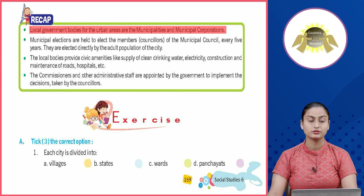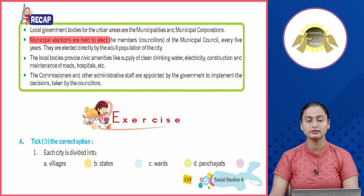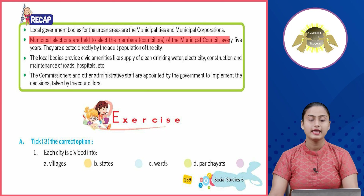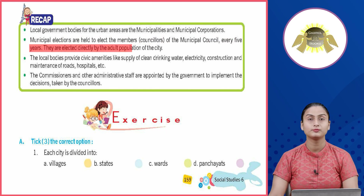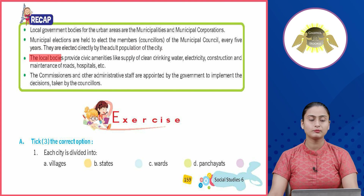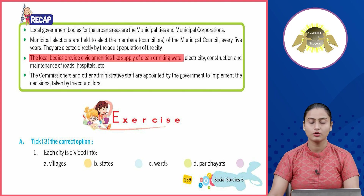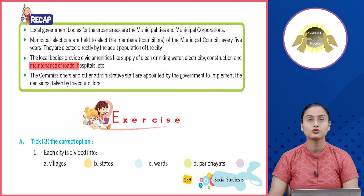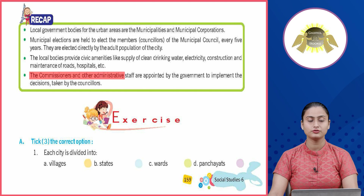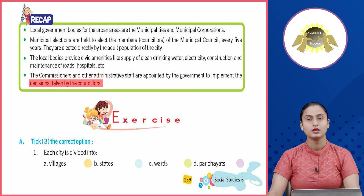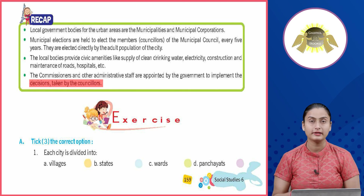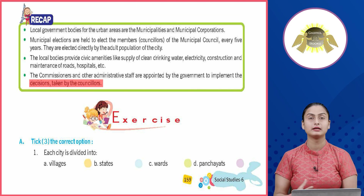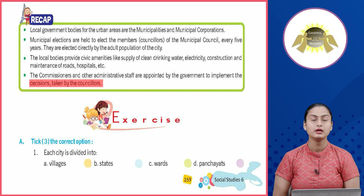Recap: Local government bodies for urban areas are the municipalities and municipal corporations. Municipal elections are held every five years to elect members of the municipal council, directly by the adult population of the city. The local bodies provide civic amenities like supply of clean drinking water, electricity, construction and maintenance of roads, and hospitals. The commissioners and other administrative staff are appointed by the government to implement the decisions taken by the councillors.